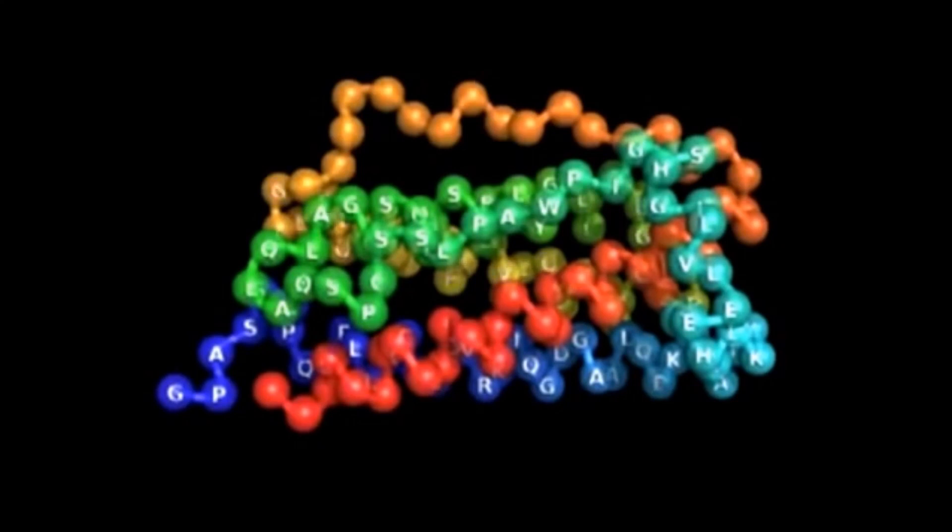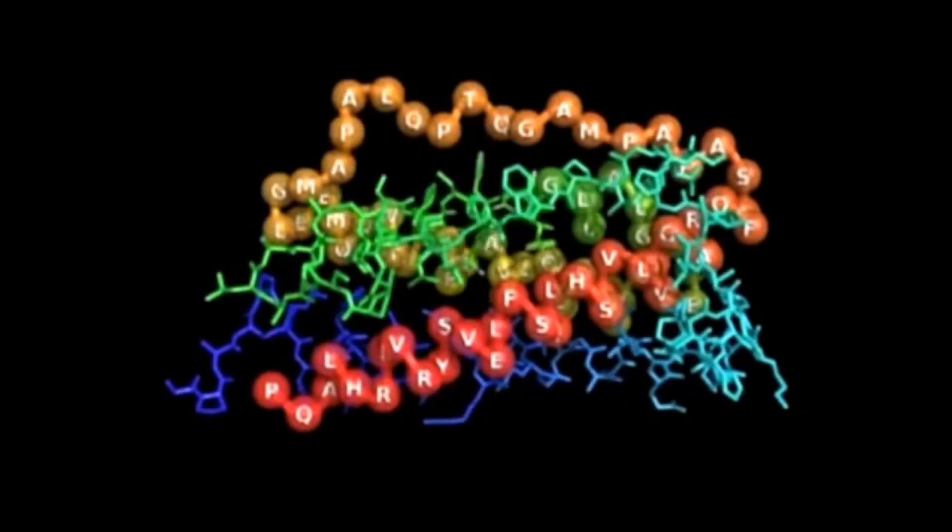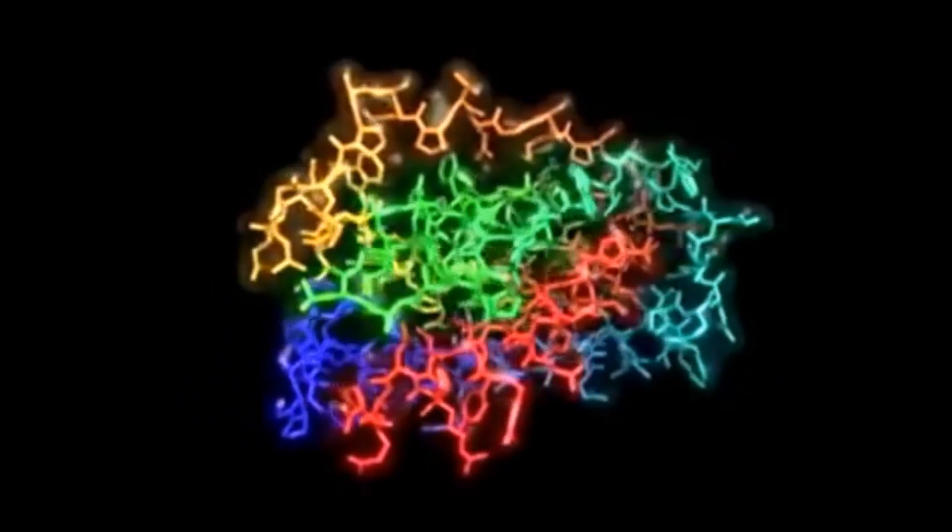Here is the one-letter amino acid code revealing the identity of each amino acid. Again now you see the amino acids drawn to show the position of each atom. This is like looking at an atomic skeleton of each amino acid.